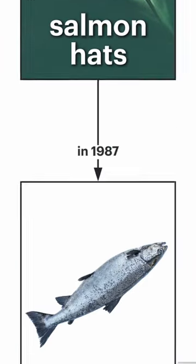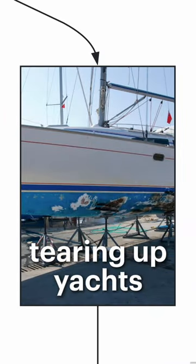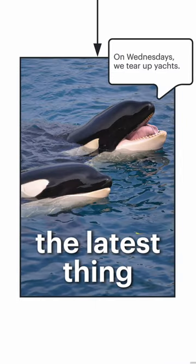Like wearing salmon hats. No really, in 1987 some groups would kill their salmon and then wear them for hats. So maybe tearing up yachts is just the latest thing that these sea pandas like to do.